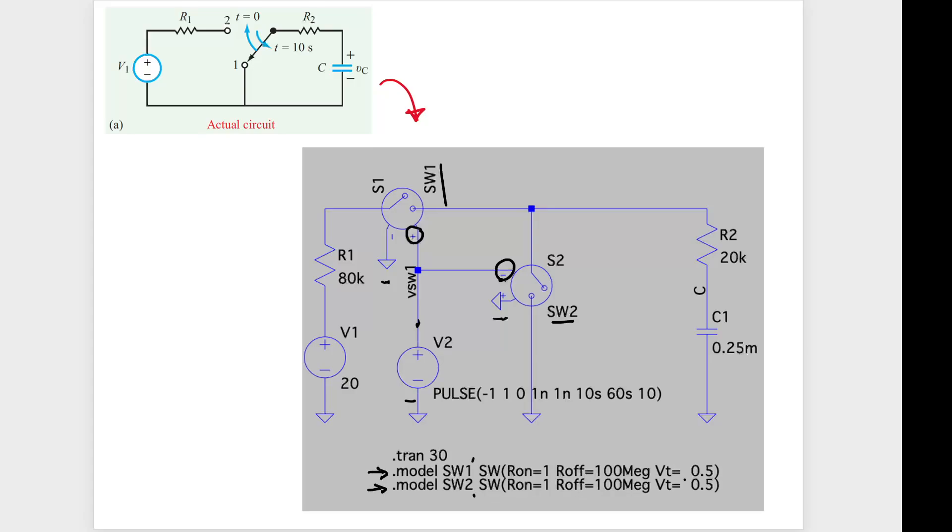However, the rest of this is the same. And using a method like this, we are able to use two single pole single throw switches to model the double pole double throw switch that's in here.